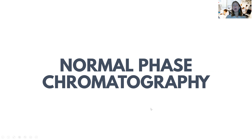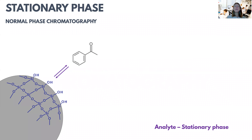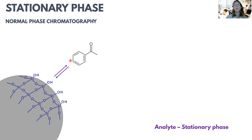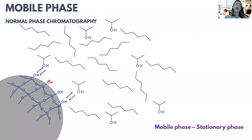So let's see what is behind normal phase chromatography. The stationary phase in normal phase chromatography is silica particles which have a number of free silenol groups, and our analytes can interact with this stationary phase based on the interaction between the analytes and the silenol groups. This is the very heart of normal phase chromatography. The mobile phase is usually an organic modifier, or actually a combination of two or more different organic solvents.